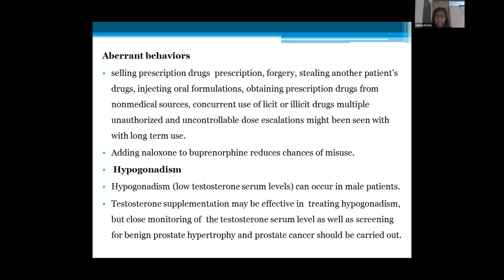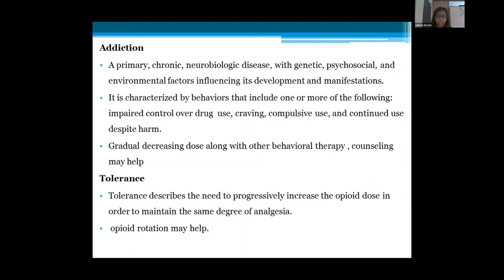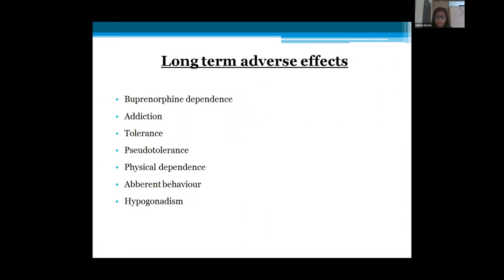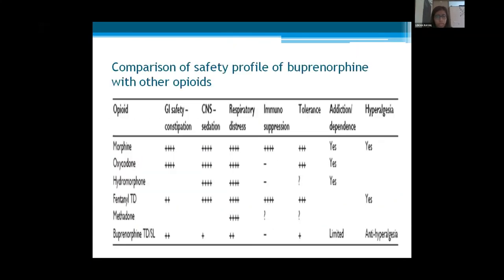Long-term adverse effects include buprenorphine dependence, addiction, tolerance, physical dependence, aberrant behavior, and hypogonadism. Physical dependence is not an indicator of addiction and buprenorphine can be safely discontinued; the withdrawal syndrome is self-limiting, usually lasting 3–10 days, and is not life-threatening. Three options for managing physical dependence: continued use, switching to buprenorphine-naloxone, or medically supervised withdrawal. Addiction is a primary chronic neurobiological disease with genetic, psychosocial, and environmental factors. Aberrant behaviors include selling prescriptions, stealing other patients' prescriptions, injecting oral formulations, and obtaining prescriptions from non-medical sources. Adding naloxone to buprenorphine reduces the chance of misuse. Hypogonadism is less common with buprenorphine than with other strong opioids.